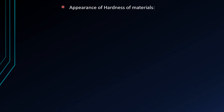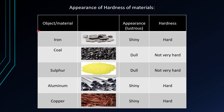Now moving on to the appearance and hardness of metals. Here you can see a table showing the appearance and hardness of various materials. Iron looks shiny and feels hard when touched — it is a metal. Coal looks dull and is not very hard — it is a non-metal. Sulfur is also dull and not very hard — it is a non-metal. Aluminium is lustrous and shiny.